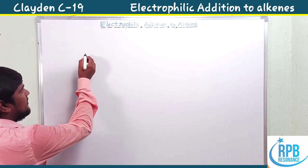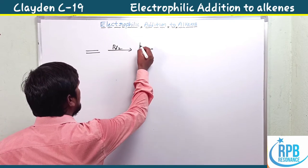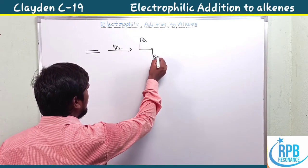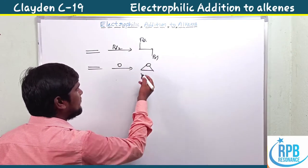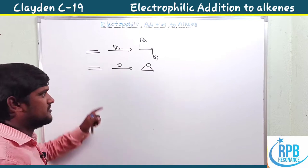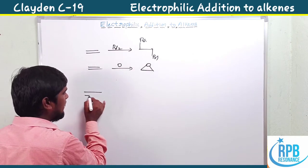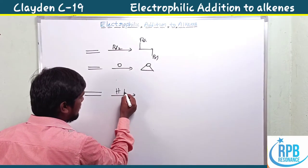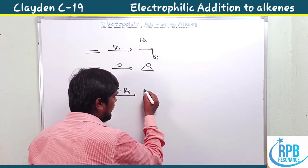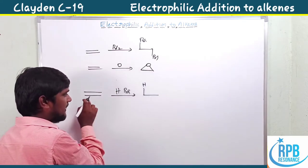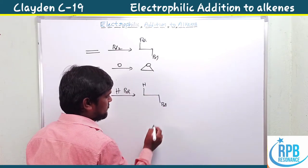Today's topic is alkenes. In the case of bromination, both ends get a similar type of attack. In the case of epoxidation also, both ends get a similar type of connection. These two topics were discussed in my previous video. Now in the case of a simple alkene undergoing hydrobromination with HBr, one end of the alkene carbon is connected to hydrogen and another end is attached to bromine.